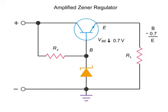Now, if we change the Zener value, observe how the transistor drops the value down 0.7. So at the emitter and the RL load resistor, we see a voltage that is 0.7 volts less than what the Zener diode permits at the transistor base.